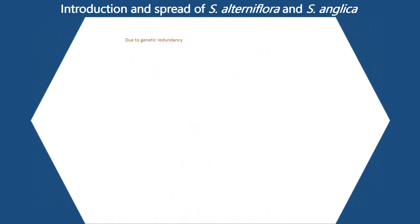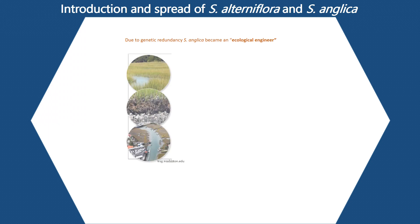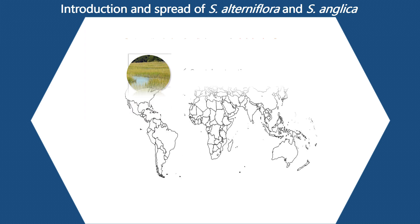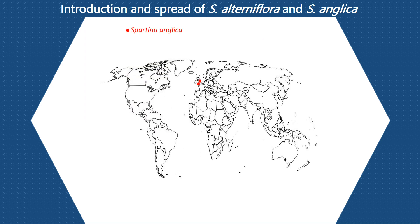This hybrid later underwent chromosome doubling and gave rise to Spartina angelica. Due to the genetic robustness of Spartina angelica, the species became an ecological engineer, and it has been used for coastal restoration, erosion control, and tidal remediation. Therefore, after its formation in southern England, the subsequent spread of the Spartina species has been through deliberate introduction or natural dispersal, emerging in some parts of the UK and other European countries. However, the colonization of Spartina angelica into other parts of the world is largely a voluntary introduction for land reclamation.